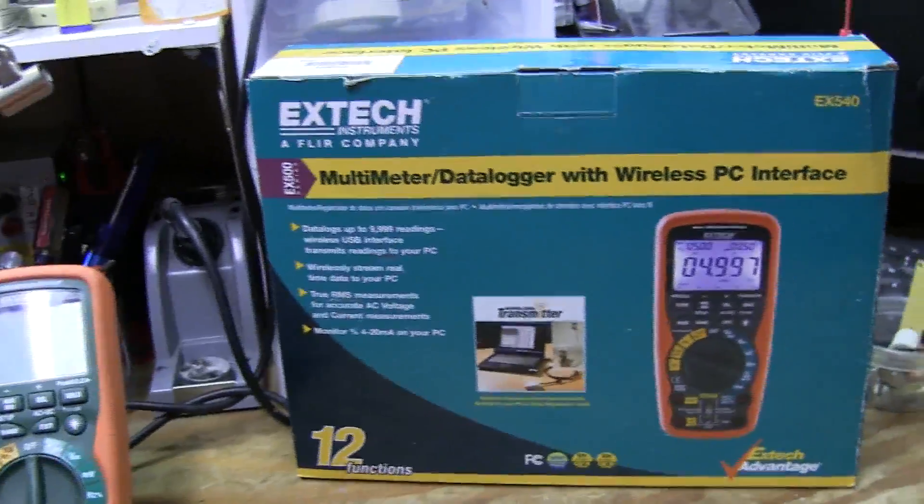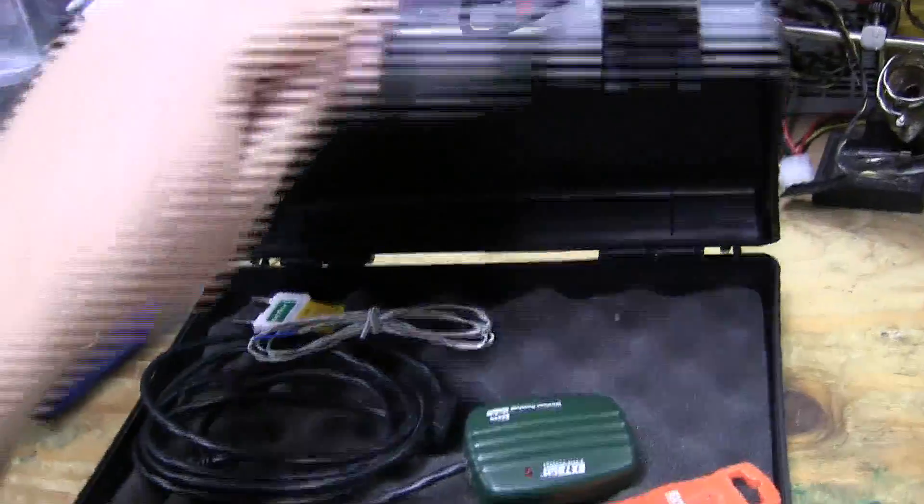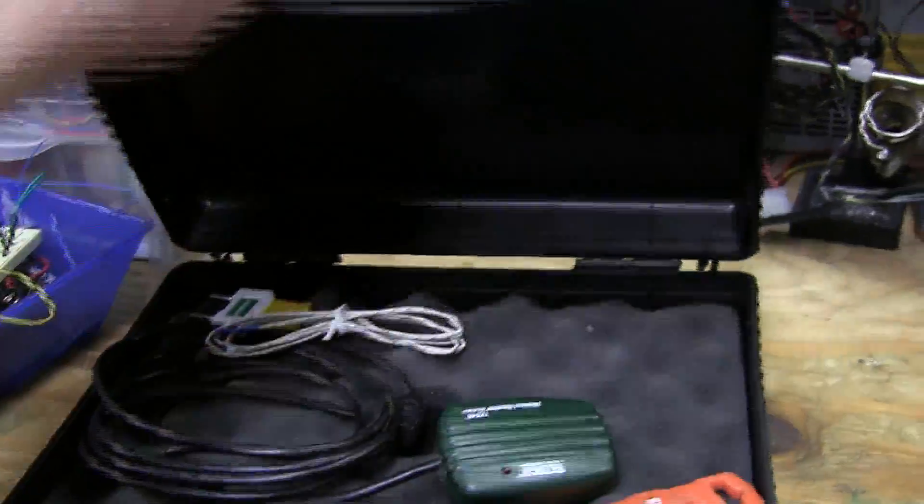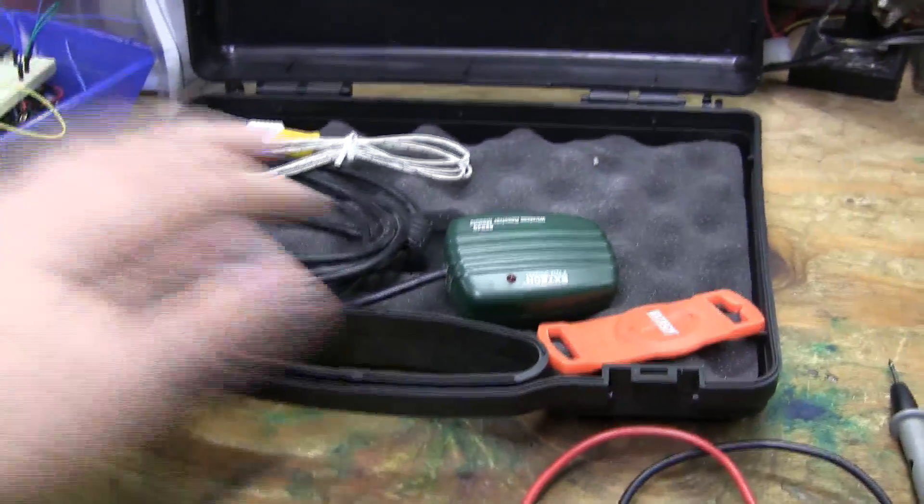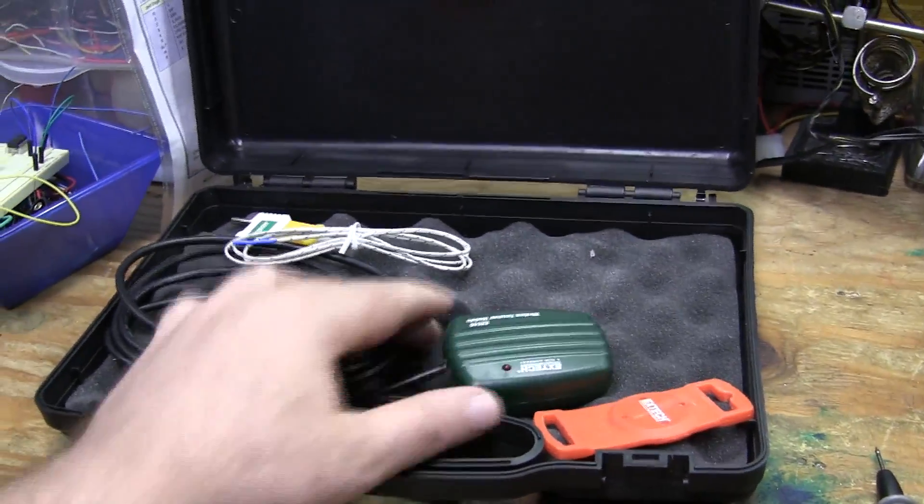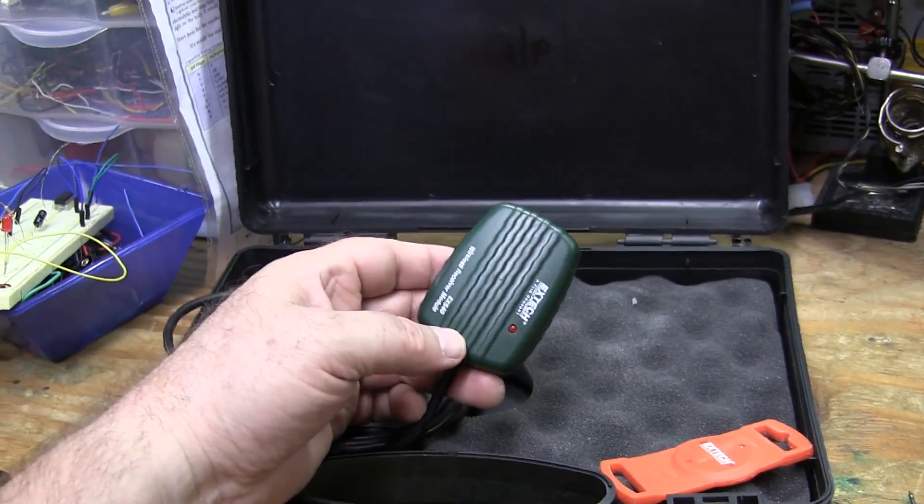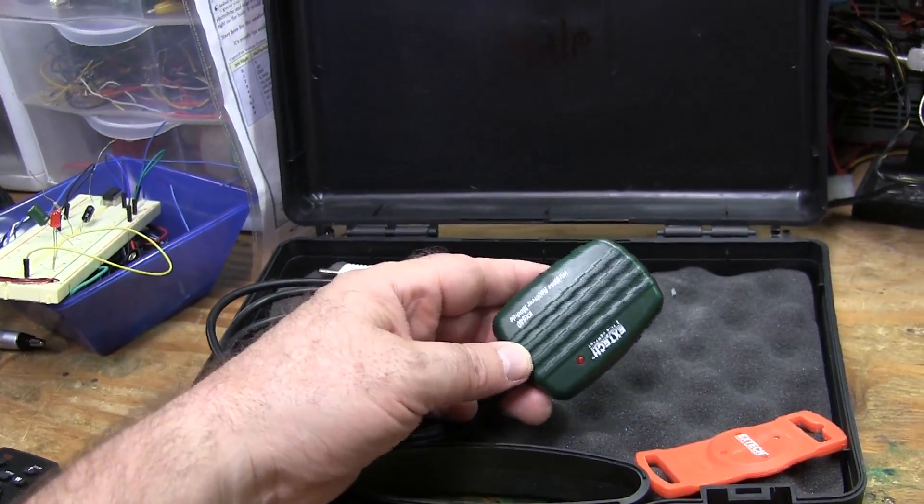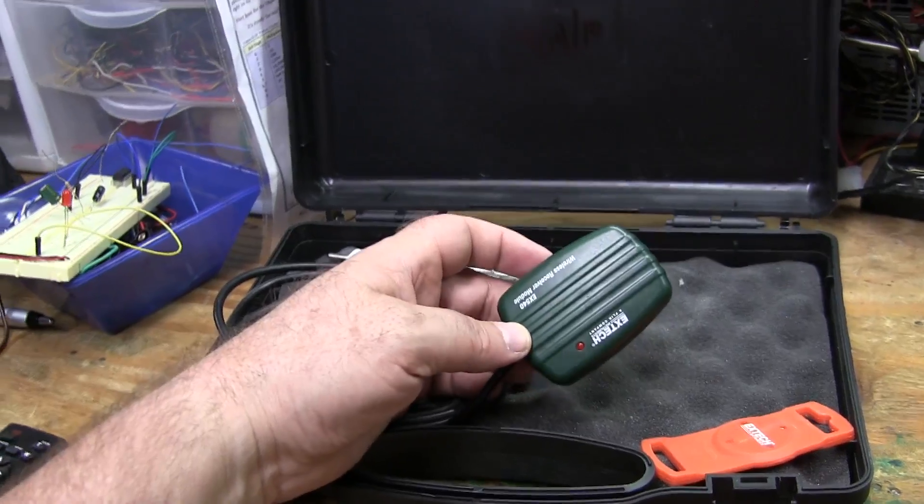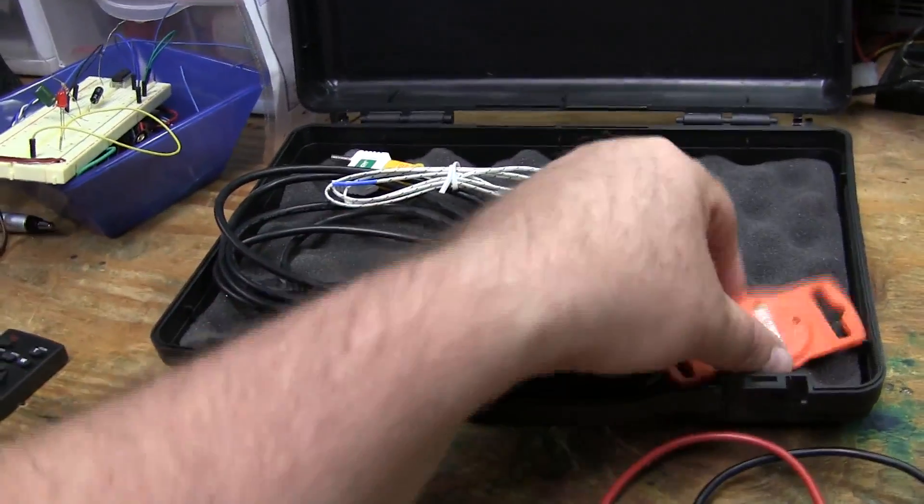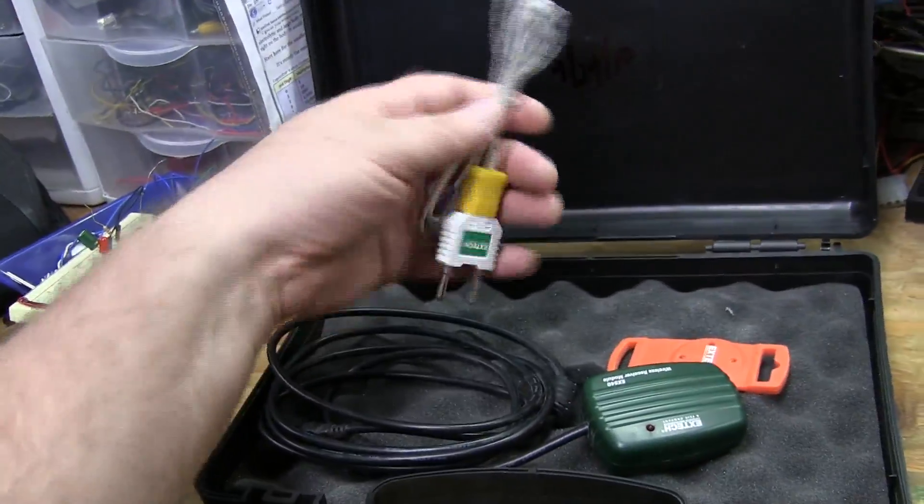There's the box that it came in. It came in a nice little plastic case. It has a wireless USB dongle here so you can set your meter up and monitor it remotely on your laptop. I think the range is roughly 30 feet. A rare earth magnet you can hang it on by the strap and of course it has a little thermometer probe.